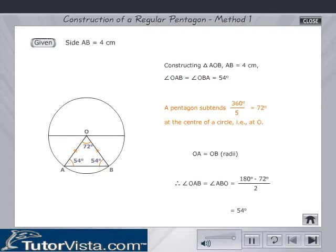A pentagon subtends 360 degrees by 5 which is equal to 72 degrees at the center of a circle, that is, at O. OA is equal to OB, since they are the radii of the circle.